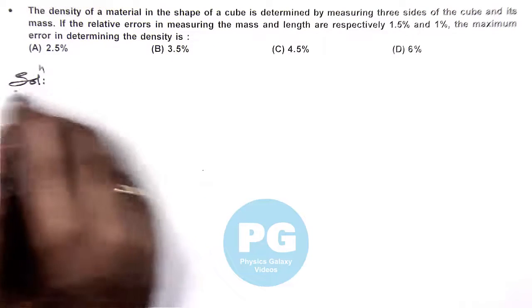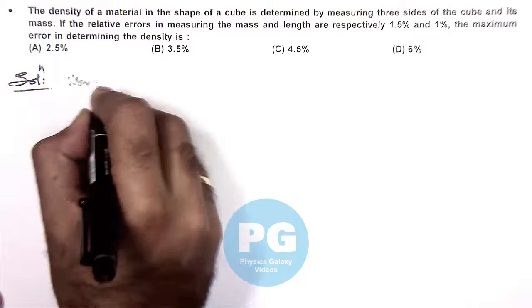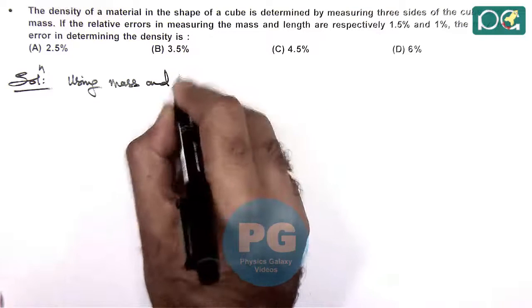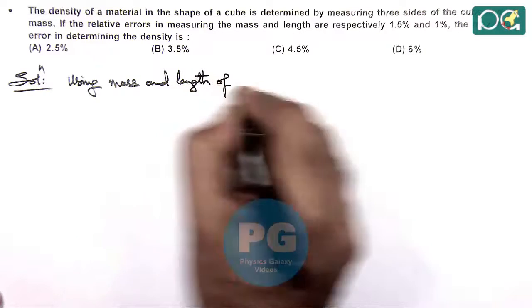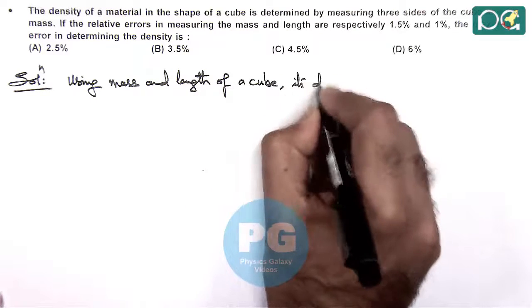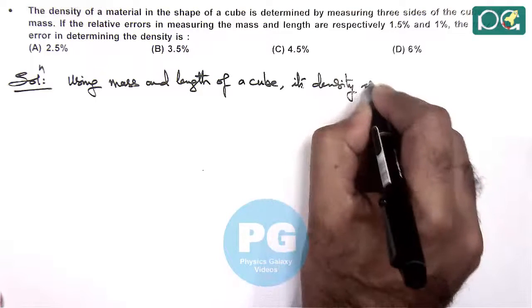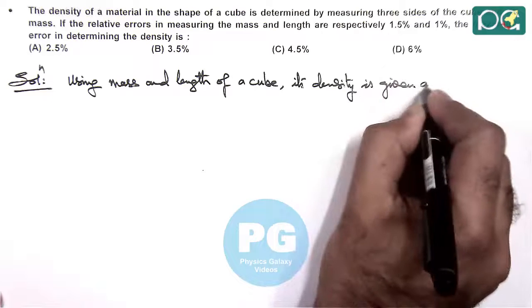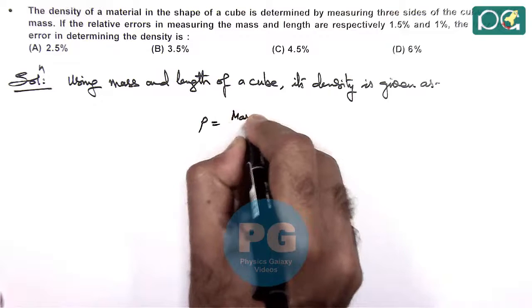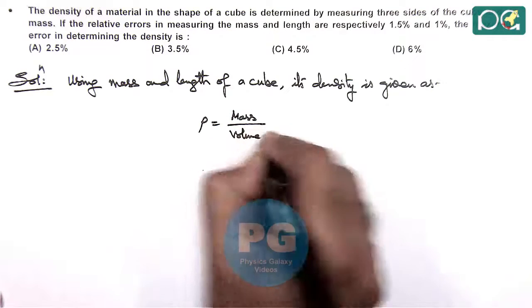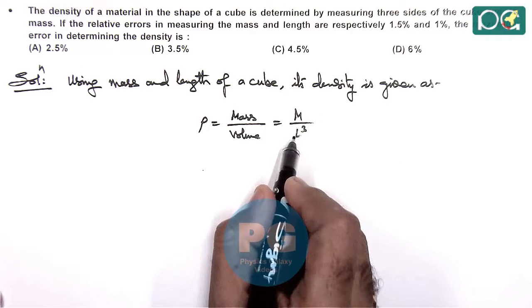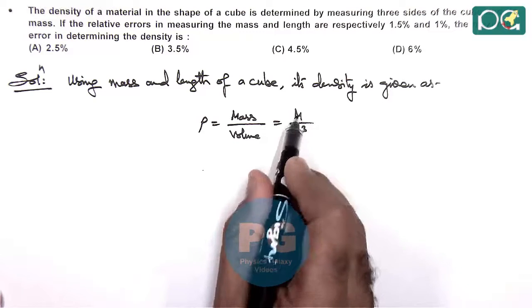So here in solution we can say using mass and density, or using mass and length of a cube, its density is given as mass. Here we can write the density is mass upon volume, which is m by l cube. If l is the length of one side of a cube, then m is its mass.